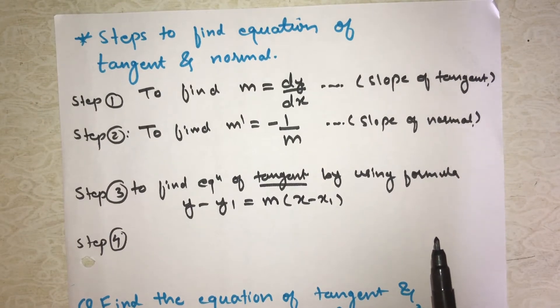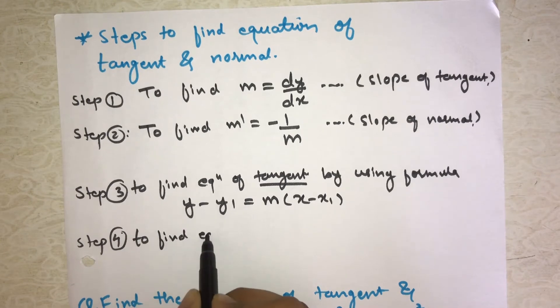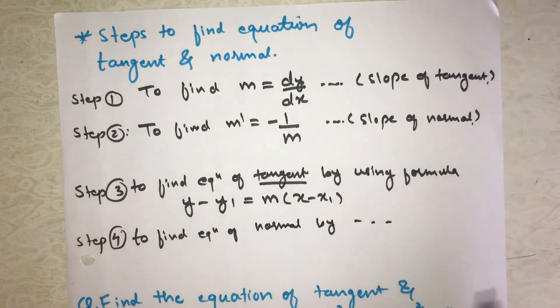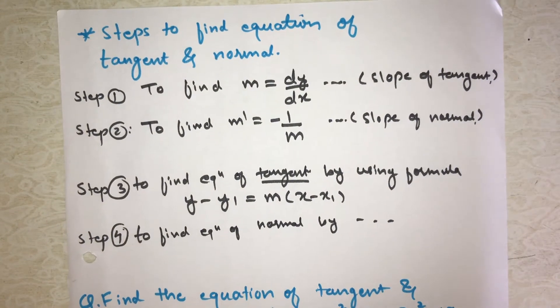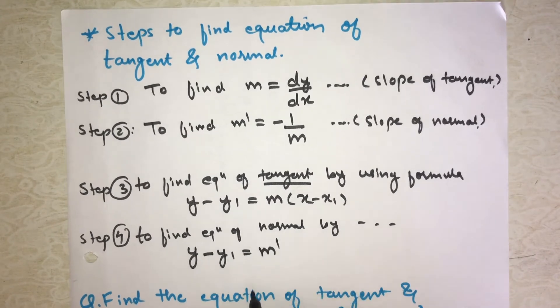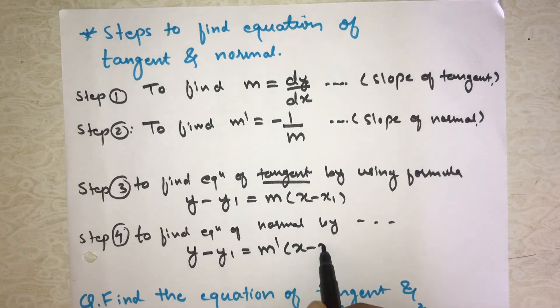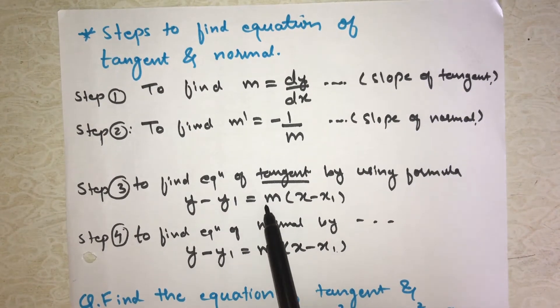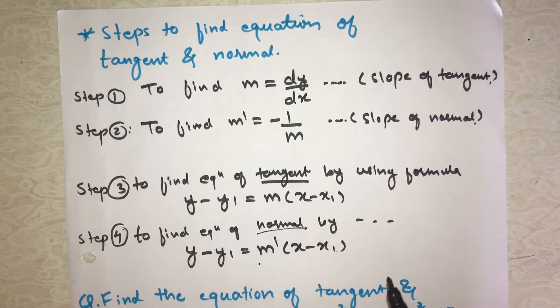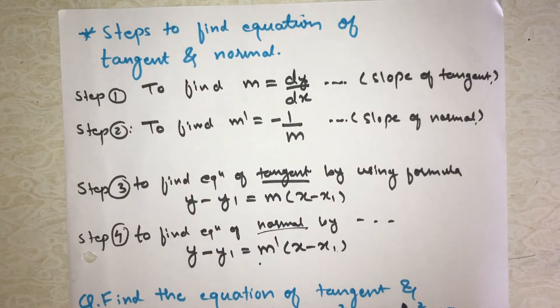Then the last step is to find equation of normal by using formula. The equation is y minus y1 equal to m dash times (x minus x1). So in equation of tangent the slope is m and for normal it's m dash. This is the difference between the formulas.